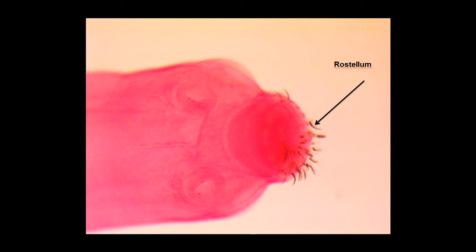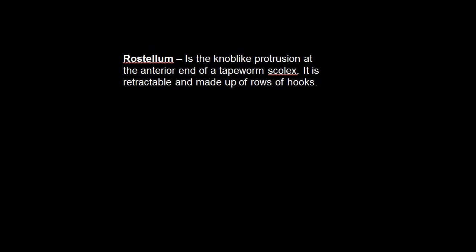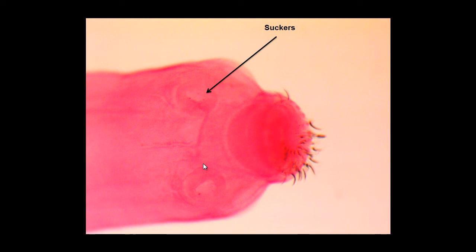Here is a picture of the rostellum showing the multiple rings of hooks. The rostellum is defined as the knob-like protrusion at the anterior end of a tapeworm scolex, retractable and made up of rows of hooks. Here we can also see some of the suckers that help anchor the scolex inside the intestine.